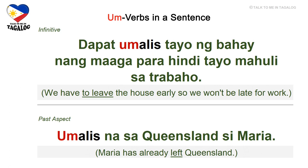Infinitive: dapat umalis tayo ng bahay ng maaga para hindi tayo mahuli sa trabaho. Dapat means should, umalis is to leave, tayo means we, bahay is house, maaga is early, mahuli is to be late, and trabaho means work — we have to leave the house early so we won't be late for work.